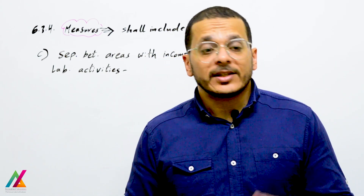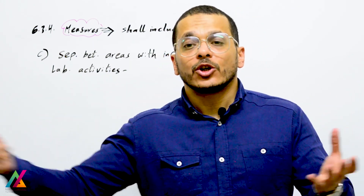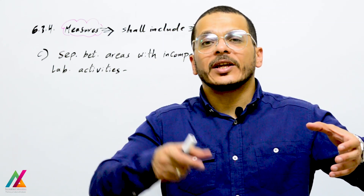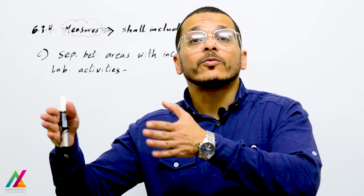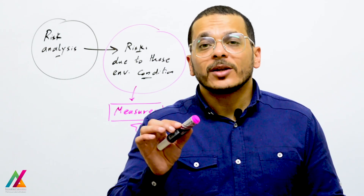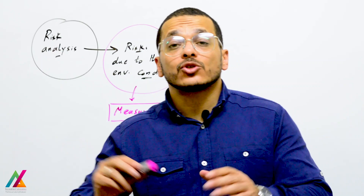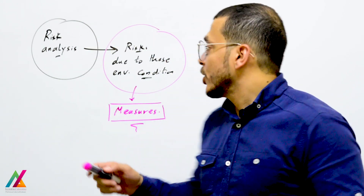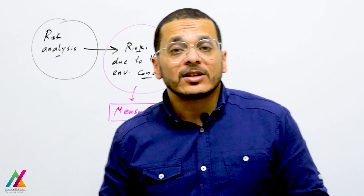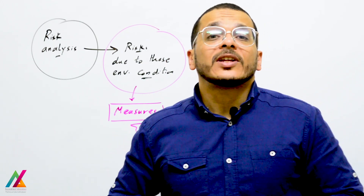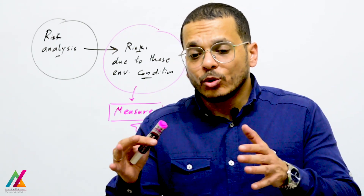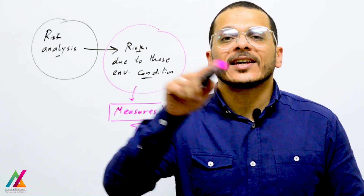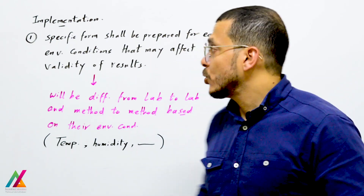There should be separation between areas with incompatible lab activities - separate rooms for standard preparation, sampling, extraction, and instruments - to prevent any contamination or interference. Inside every unit, you shall perform a risk analysis. From this analysis, you will identify risks due to environmental conditions that may affect the validity of results, then find actions or measures to eliminate or reduce these risks, which shall be recorded in the risk register form.